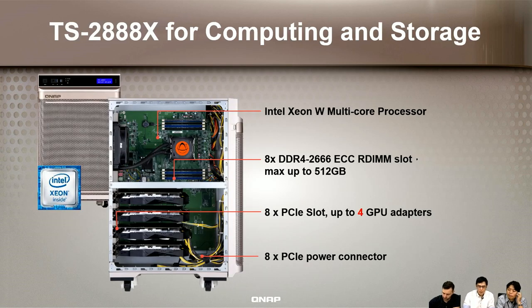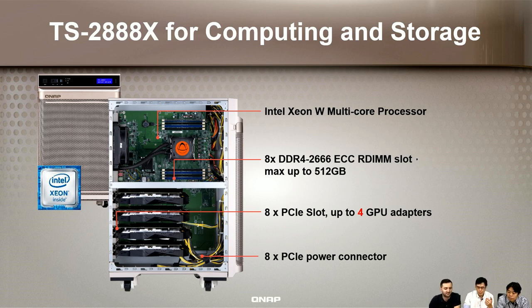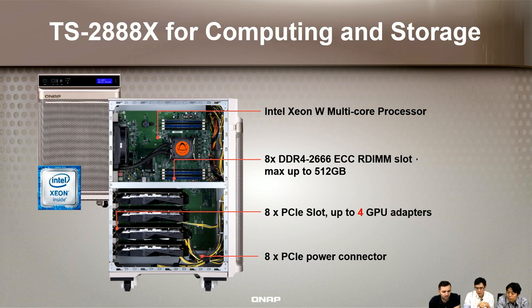Let's have a quick overview of the TS-2888X. We've introduced more details before, so today is just a recap to help customers see the specifications again. This is why we say it's a very high-computing storage system — it's equipped with an Intel Xeon W processor, up to 18 cores, supporting up to 512 GB of memory. It also provides 8 PCIe slots and supports up to 4 GPU adapters, with extra PCIe power connectors for those GPU cards.